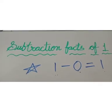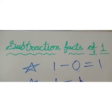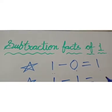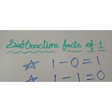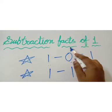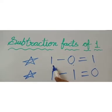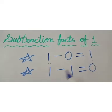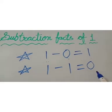Now, if I subtract 1 star from 1 star, the answer will be 0. So subtraction facts of 1: 1 minus 0 is equal to 1, and 1 minus 1 is equal to 0.